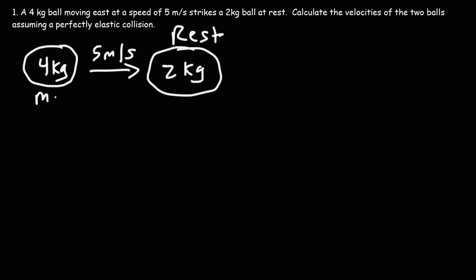So M1 is 4 kilograms, M2 is 2 kilograms. V1 is 5 meters per second. V2 is 0 because the second ball is at rest. We want to find the final velocities of ball 1 and ball 2.